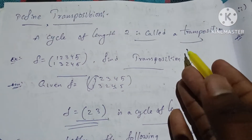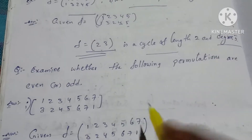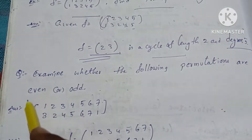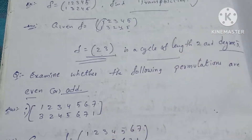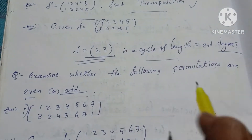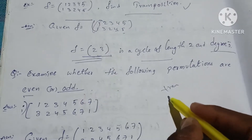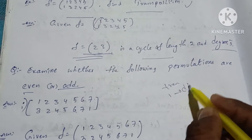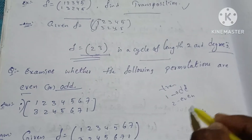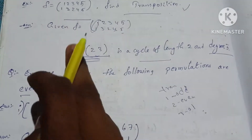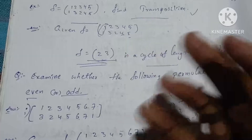Now let's talk about this: to examine whether the following permutations are even or odd. The permutations are even or odd. Here are some transpositions — a couple of transpositions. 1 is 8. To add 2, 2 is even. 3 is odd. And the transpositions are even. In the transpositions, it's even or odd.